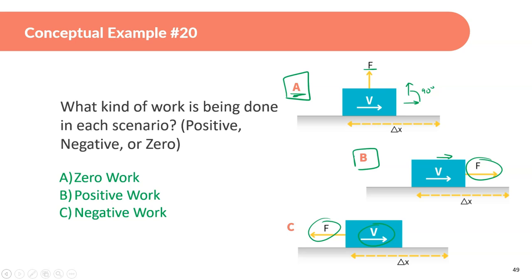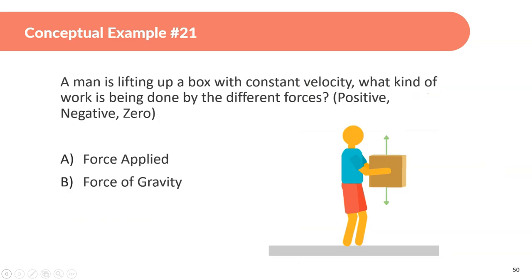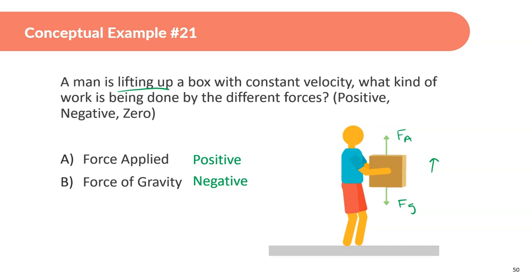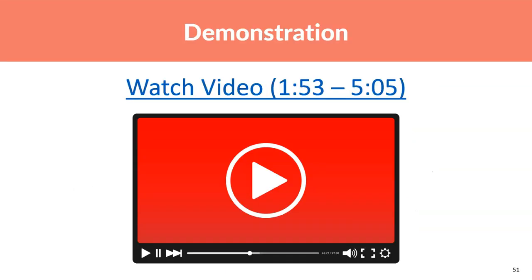A man is lifting a box with constant velocity. What kind of work is done by each force? Force applied is going up and force of gravity is going down, while the box moves up. Force applied does positive work because it's applied upward while the box moves upward. Force of gravity does negative work because gravity slows the lift, causing the box to lose kinetic energy as gravity pulls it down.